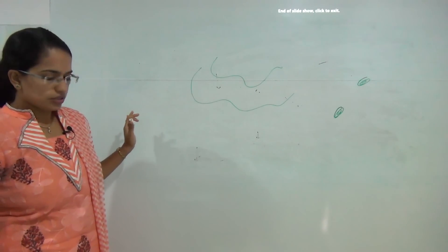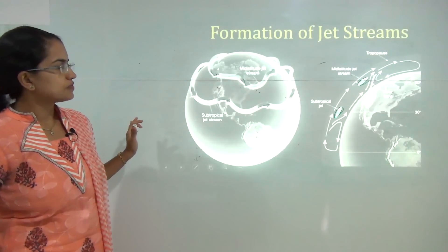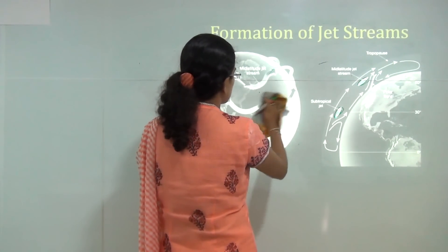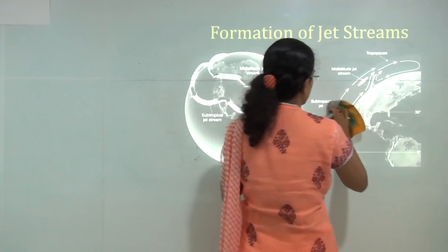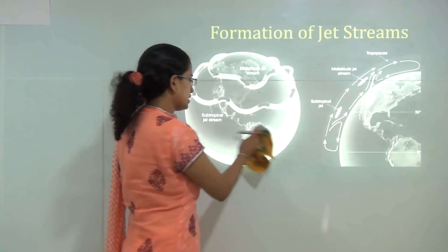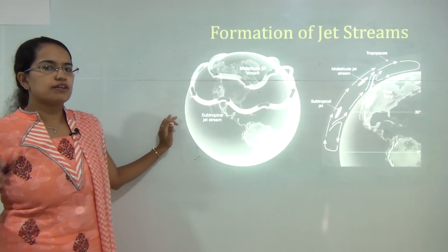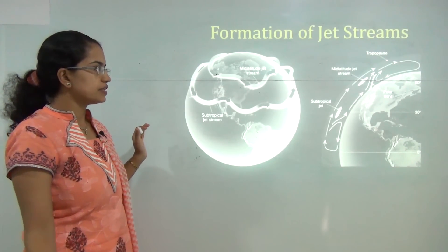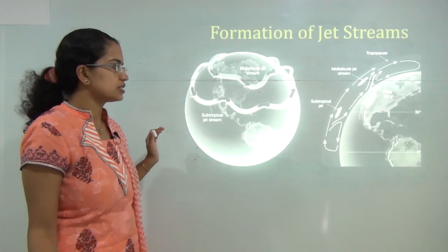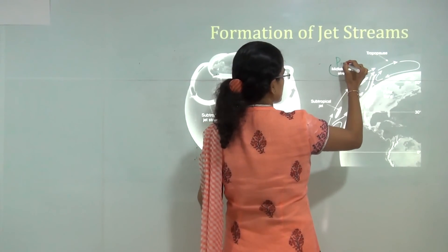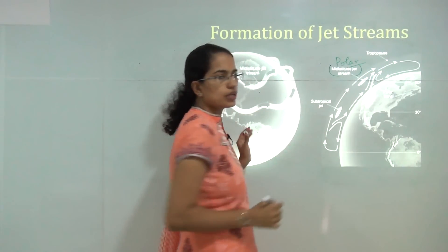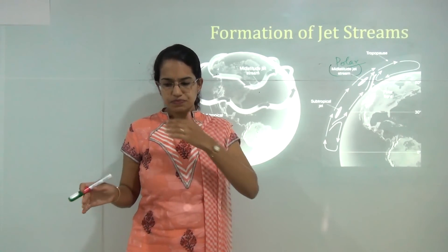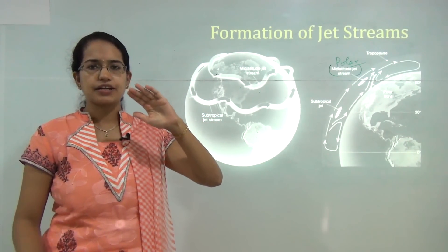When classifying jet streams we identify three basic types, corresponding to the three formation mechanisms discussed. First, the mid-latitude jet stream, also known as the polar jet stream. These are among the most intense jet streams on Earth, usually found at a height of about 10 kilometers.